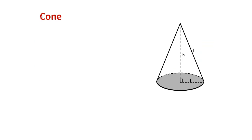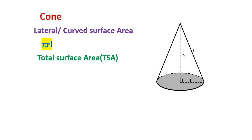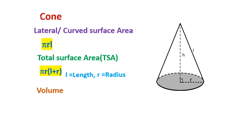Cone: curved surface area pi r l, total surface area pi r into l plus r, where l is length, r is radius, volume 1 by 3 pi r square h, h is height.